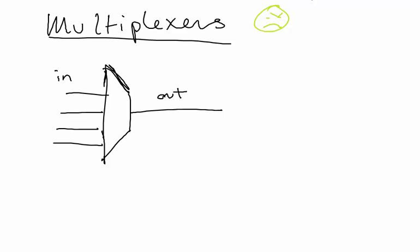The way it does that is based on conditions called select lines. And this is where I got really confused with multiplexers - what the hell were select lines?